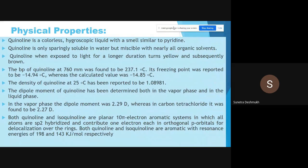Now physical properties. It's a colorless hygroscopic liquid with a smell similar to pyridine. Quinoline is only sparingly soluble in water but miscible with nearly all organic solvents. When exposed to light for a longer duration, quinoline turns yellow and subsequently brown. Boiling point at 760 mm was found to be 231.1°C. Freezing point is -14.94°C. Density is 1.08. In vapor phase, dipole moment is 2.29 Debye, and in CCl4 it was 2.27 Debye.